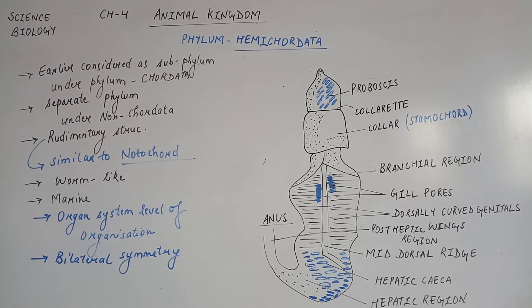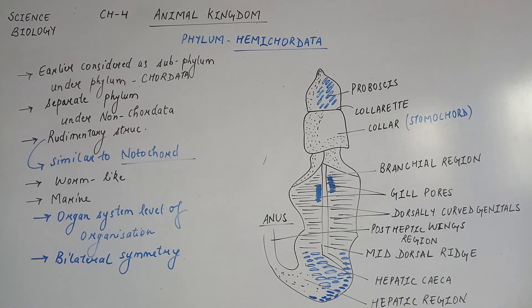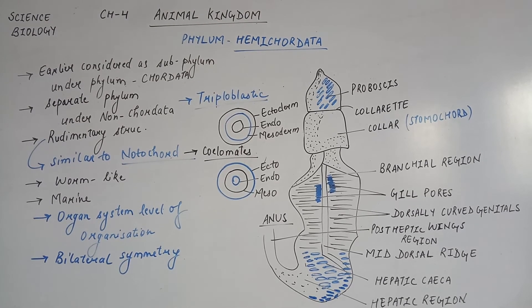The characteristic feature of Hemichordata is Bilateral Symmetry. If we dissect it into two parts we will get two equal parts, but these parts are not identical. This is bilateral symmetry - equal parts can be divided, but they will not be identical. Similar to previous phylums such as Echinodermata, these are also Triploblastic organisms and Coelomates.